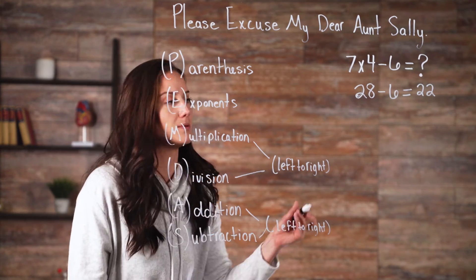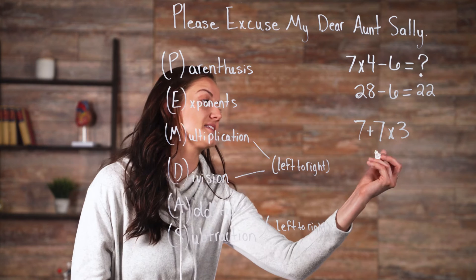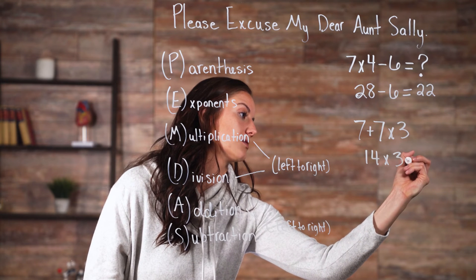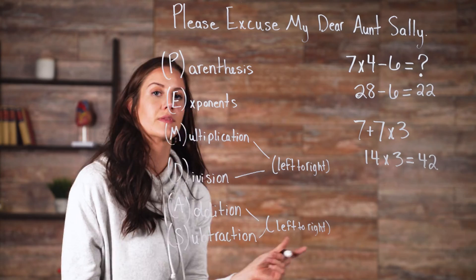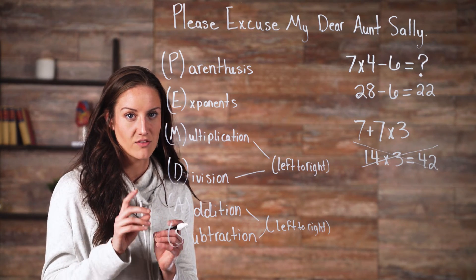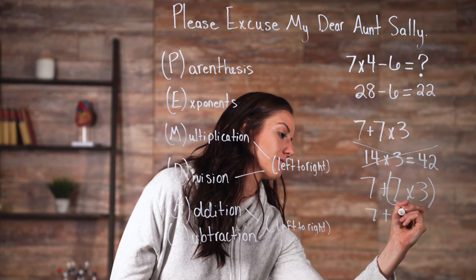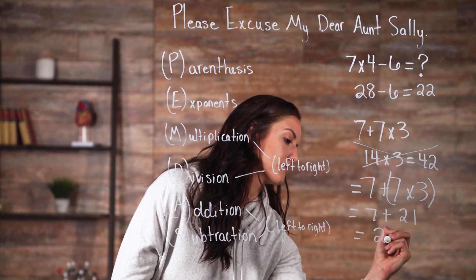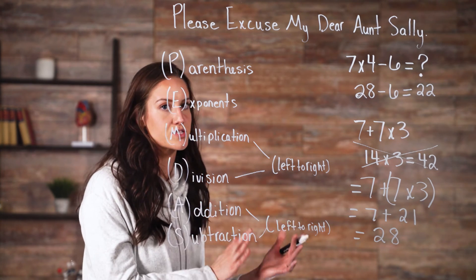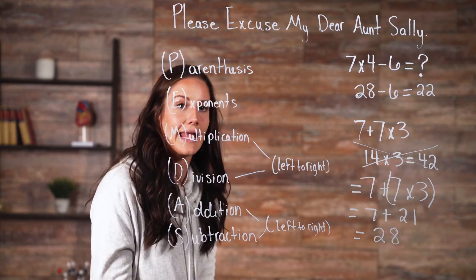Now let's look at another problem. Without following the order of operations, you could incorrectly calculate this as 7 plus 7, which equals 14, times 3, which equals 42 — and this would be wrong. Remember, you multiply before you add. Therefore, the equation should be solved using parentheses to group the numbers that take place first. In this case, it's 7 times 3, which gives us 21, and we have plus 7 left over. When we add those together, we get 28. And that's our answer.